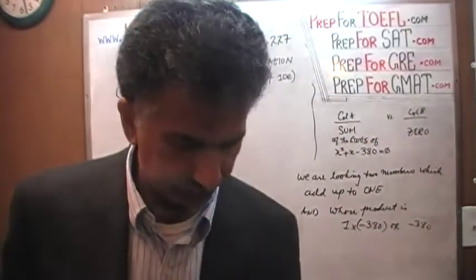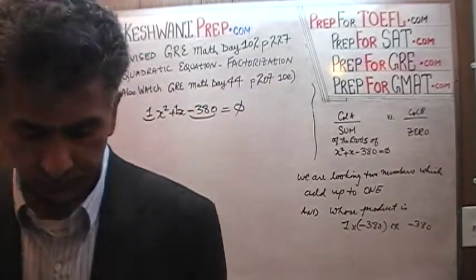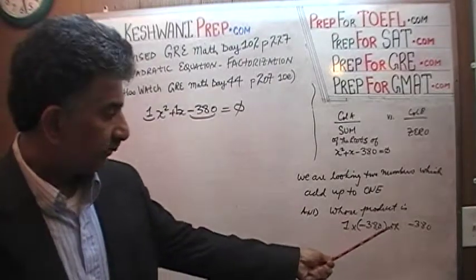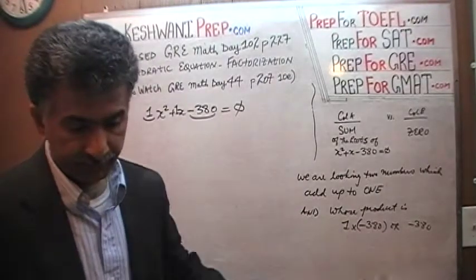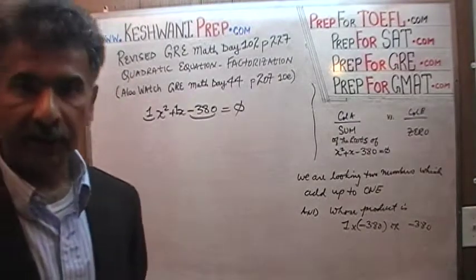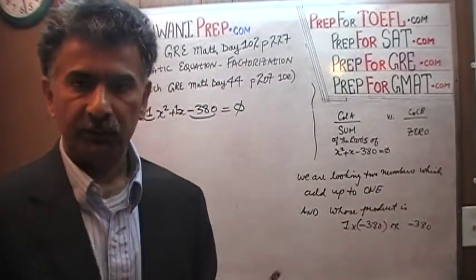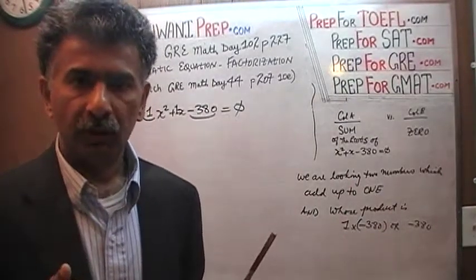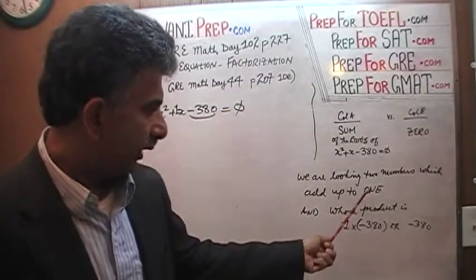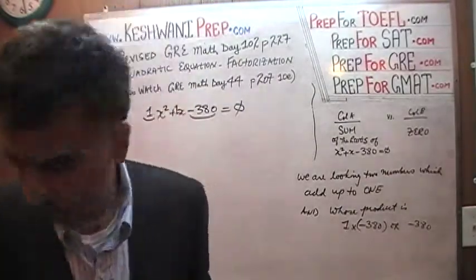That is the tricky part. Can you think of two such numbers that add up to just 1 and whose product happens to be negative 380? The fact that their product is negative and they add up to just 1 should tell you that one of them has to be positive and the other one has to be negative. Pause the video and think of two such numbers that add up to 1 and their product is negative 380.